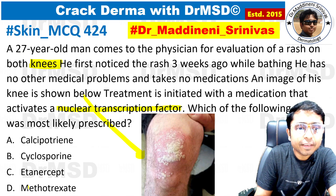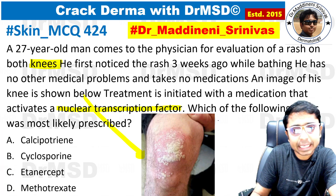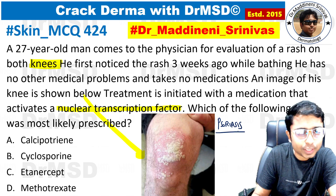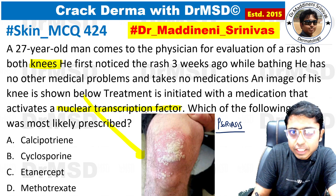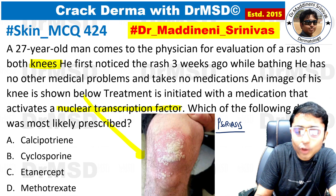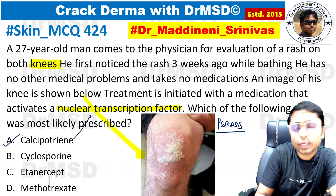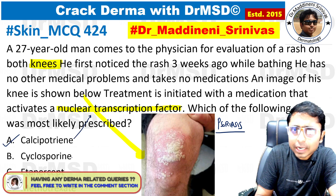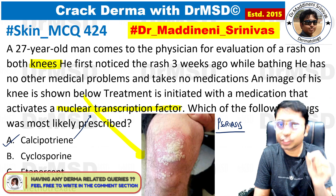If by looking at this image you have diagnosed this as a case of psoriasis vulgaris or chronic plaque psoriasis, your diagnosis is right. The mechanism of action of the vitamin D analog calcipotriol is through the nuclear transcription factor. Cyclosporine, etanercept, and methotrexate are all medications used in psoriasis patients, but each has a different mechanism of action.